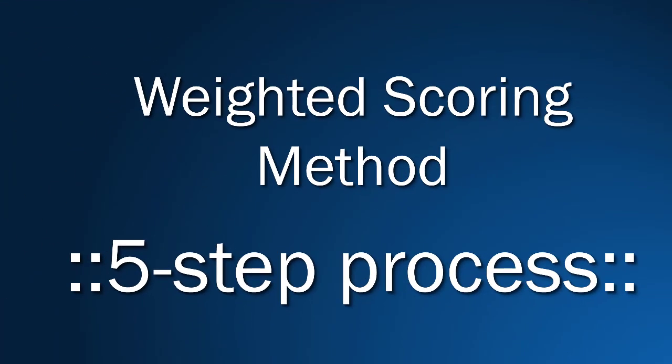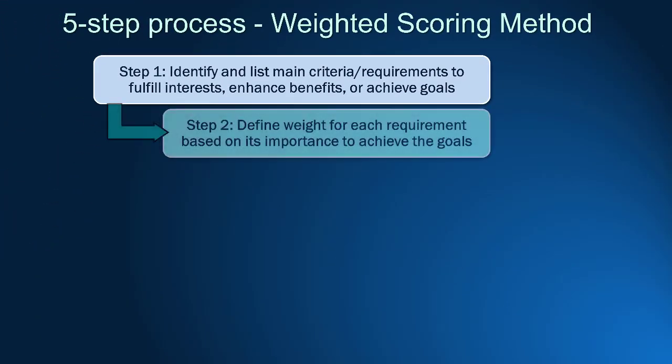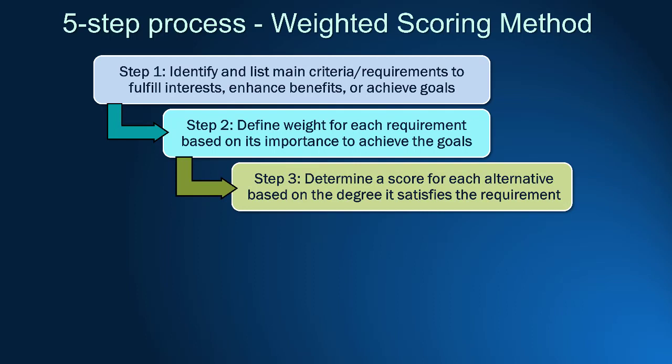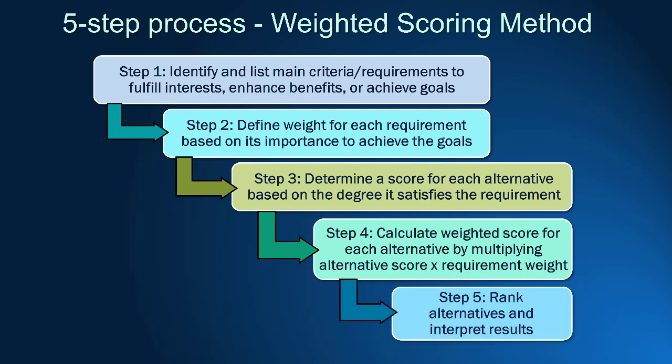The weighted scoring method can be explained in five easy steps. First, define the objective and requirements. Second, grade each requirement's importance with weights. Three, identify alternatives to achieve the objective. Four, give scores to each alternative and calculate the total weighted score. Finally, rank alternatives and interpret the results.